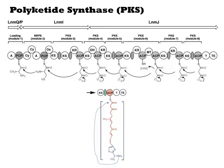Here we have primarily a polyketide synthase, but it is initiated with an amino acid and one-step non-ribosomal peptide formation. In the final product, there is a thiazole that originated as alanine and serine. This is the portion of the molecule built by the NRPS domains.